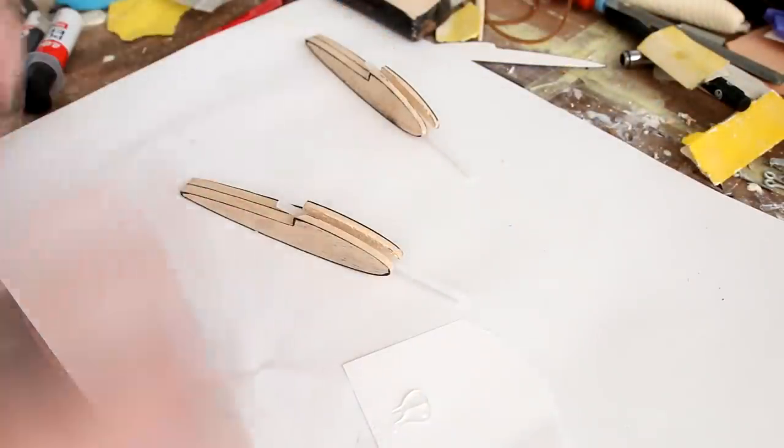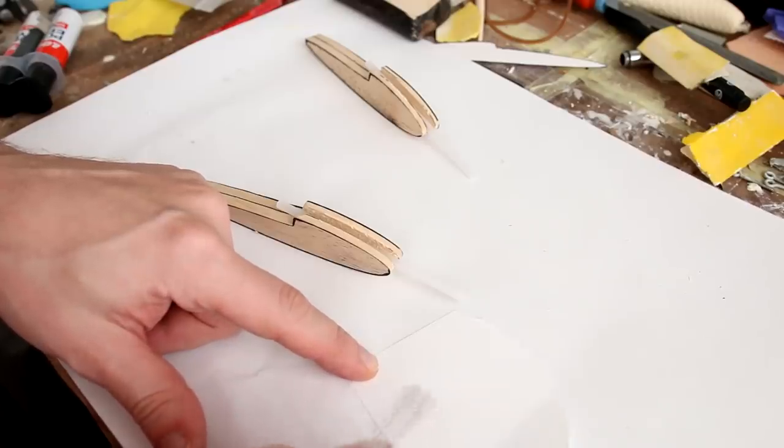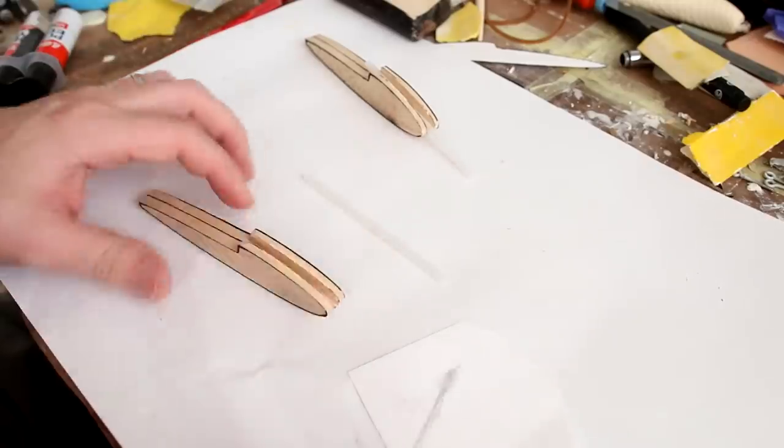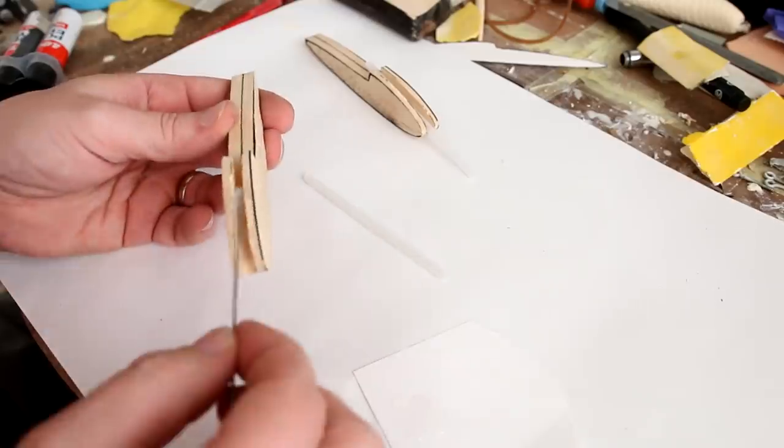Now that I had the hole excavated, I just needed to mix some five-minute epoxy and glue the tubes in place. And as you can see, I left a little bit extra on the tubes because it's really easy to cut that off later on and really hard to add more.